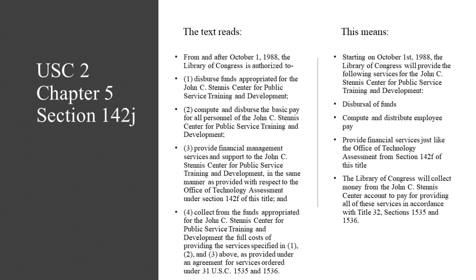The text reads: From and after October 1, 1988, the Library of Congress is authorized to: 1. Disburse funds appropriated for the John C. Stennis Center for Public Service Training and Development. 2. Compute and disburse the basic pay for all personnel of the John C. Stennis Center for Public Service Training and Development. 3. Provide financial management services and support to the John C. Stennis Center for Public Service Training and Development, in the same manner as provided with respect to the Office of Technology Assessment under Section 142F of this title.